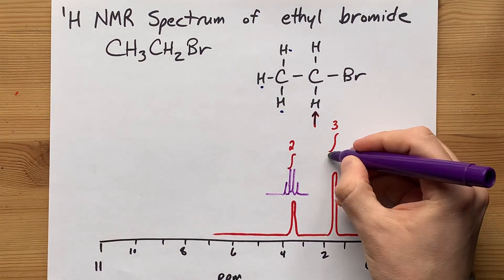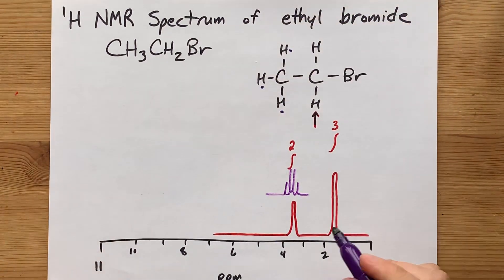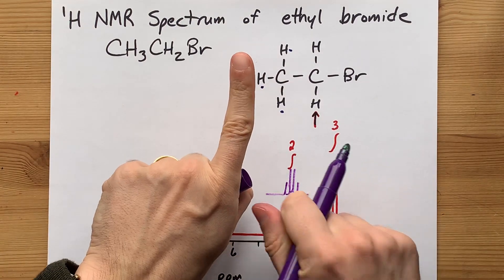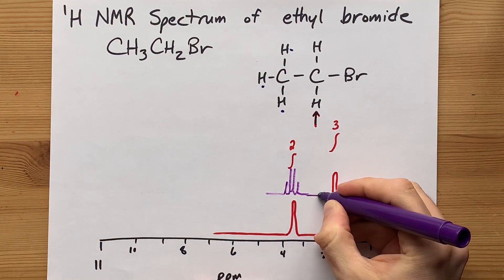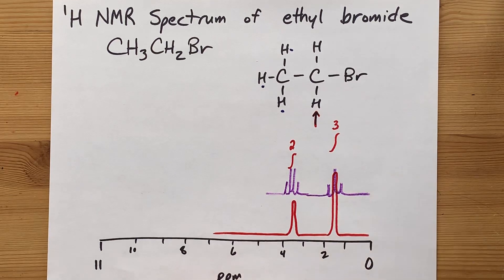These three hydrogens have two hydrogens that are adjacent to them. So, they'll split into three peaks because you start with one, split once, split twice, three peaks. That's going to give you one, two, three. Beauty.